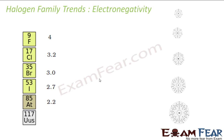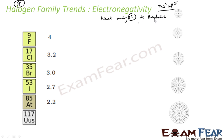Let's see the trends in electronegativity. Electronegativity is the tendency of an atom to attract other electrons towards itself. Group 17 elements have an electronic configuration of NS2NP5, and they need only one electron to be stable. Since they need only one electron to be stable, they have a high tendency to attract nearby electrons, giving them a high electronegativity value. Fluorine has the highest value of electronegativity in the entire periodic table — not only in this group — and that value is 4.